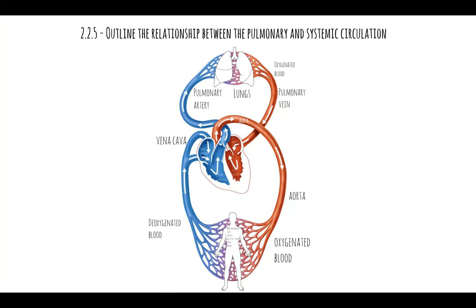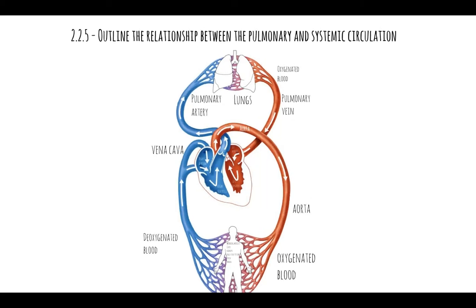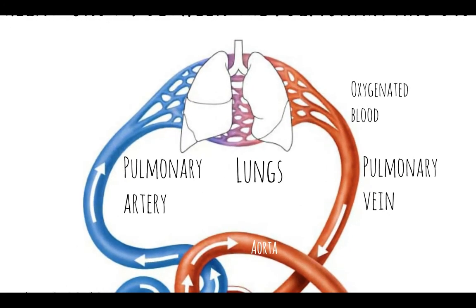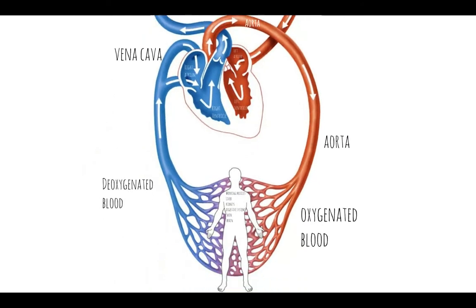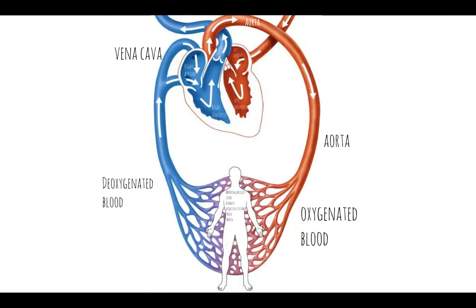To summarize, the relationship between pulmonary and systemic circulation is to make sure that deoxygenated blood is returned to the heart from the body, taken to the lungs where it picks up fresh oxygen, returns to the heart, and is then pumped around the body. Anything including the heart, pulmonary artery, pulmonary veins, and the lungs is the pulmonary circulation. Anything that includes the heart, aorta, vena cava, and the body is the systemic circulation.